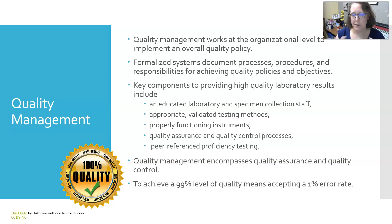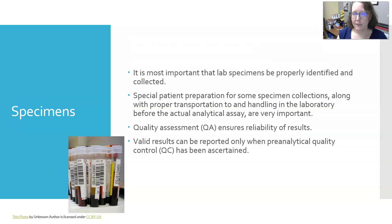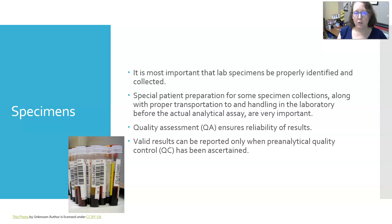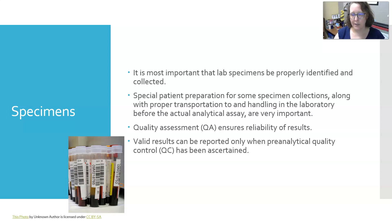Quality management encompasses both quality assurance and quality control. To achieve a 99% level of quality means that you accept a 1% error rate. It is most important that lab specimens be properly identified and collected, because if you do not have a properly identified and collected specimen, then everything downstream is going to be in error or can cause harm to the patient. Special patient preparation for some specimen collections might need to be done, along with proper transportation and handling in the laboratory before the actual analytical assay happens.